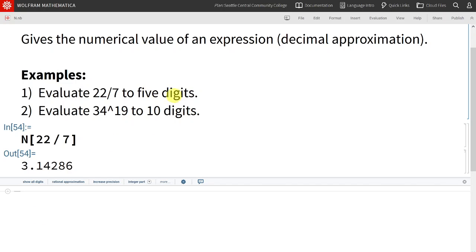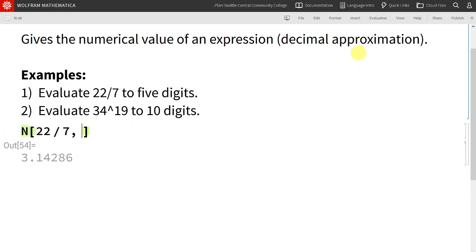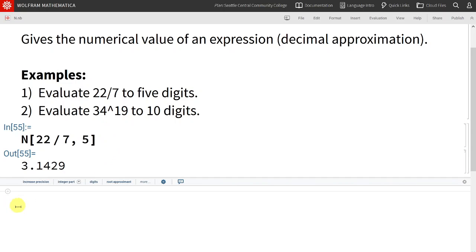Now, we want this to 5 digits. So, to fix that, we push comma 5. So, we have the expression we want to evaluate, comma, and then the number of digits we want to evaluate it to. Shift enter, and we see 3.1429. Now, notice it's not 5 decimal places, but 5 total digits.